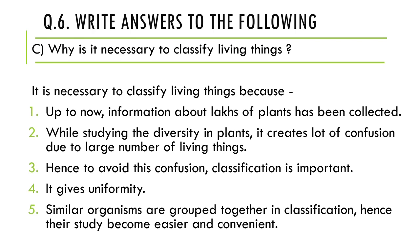The next question is: why is it necessary to classify living things? It is necessary to classify living things because, first, up to now information about millions of varieties of plants and animals has been collected. Second, while studying the diversity in plants, it creates a lot of confusion due to the large number of living things — there was confusion among scientists about how to study such vast data. Third, hence, to avoid this confusion, classification is important.